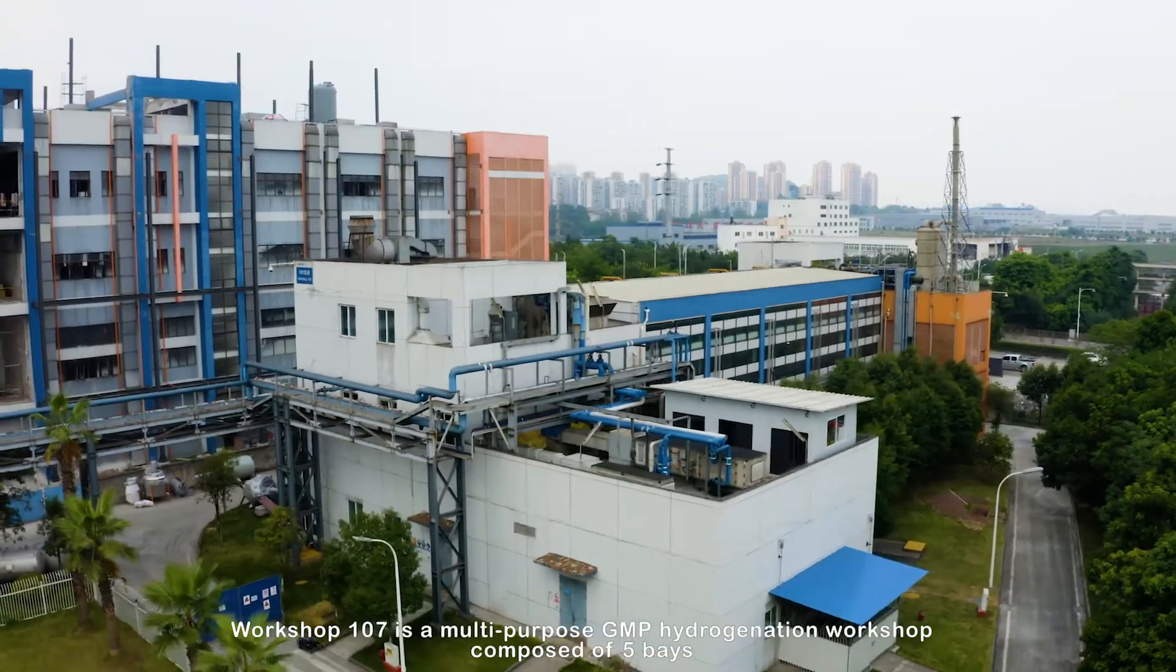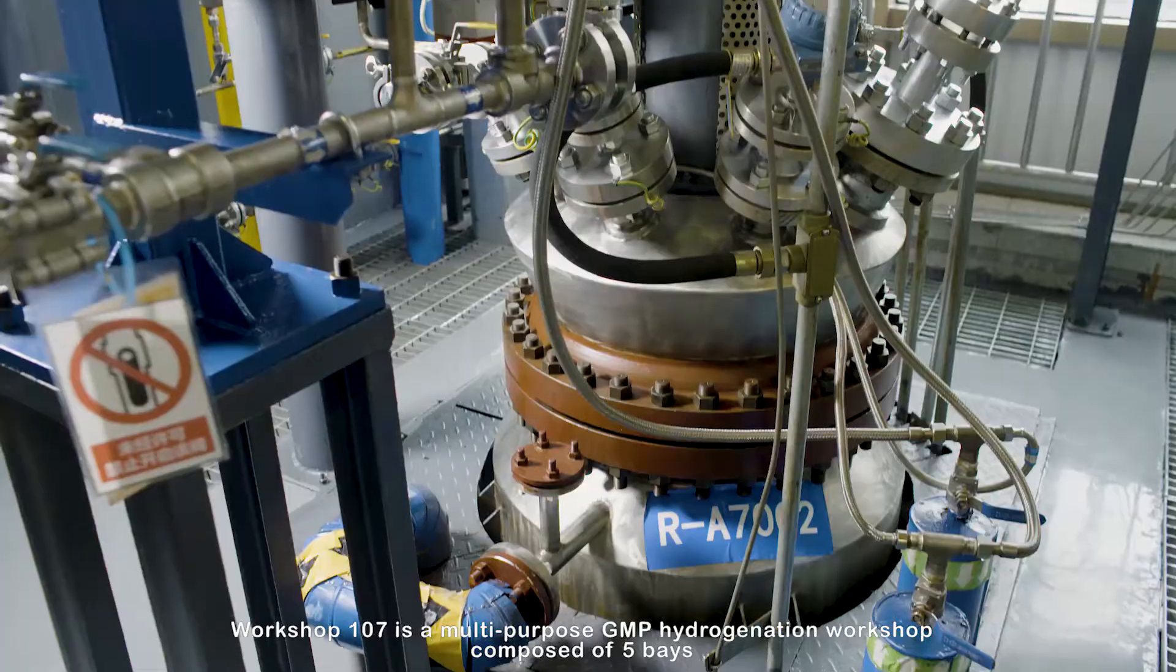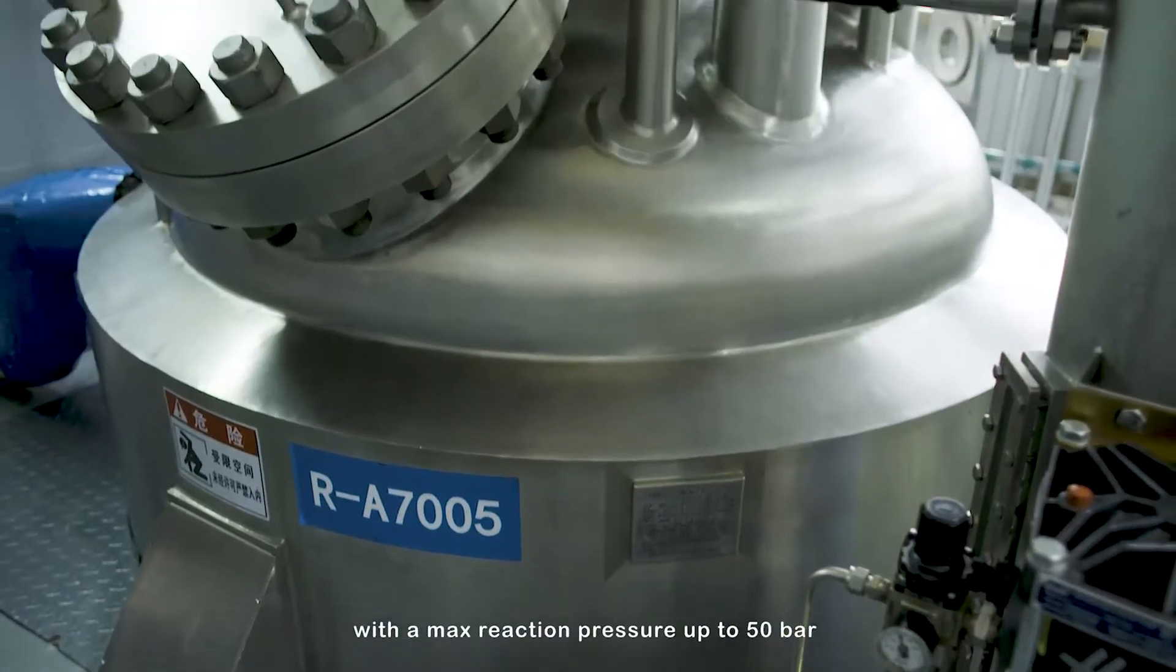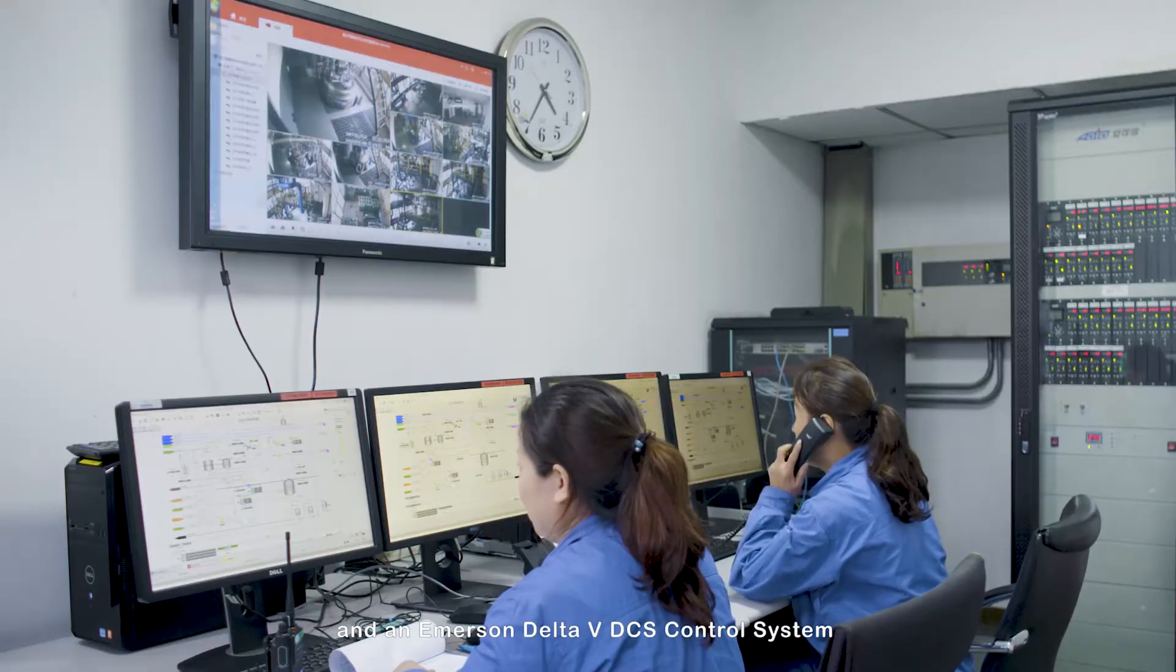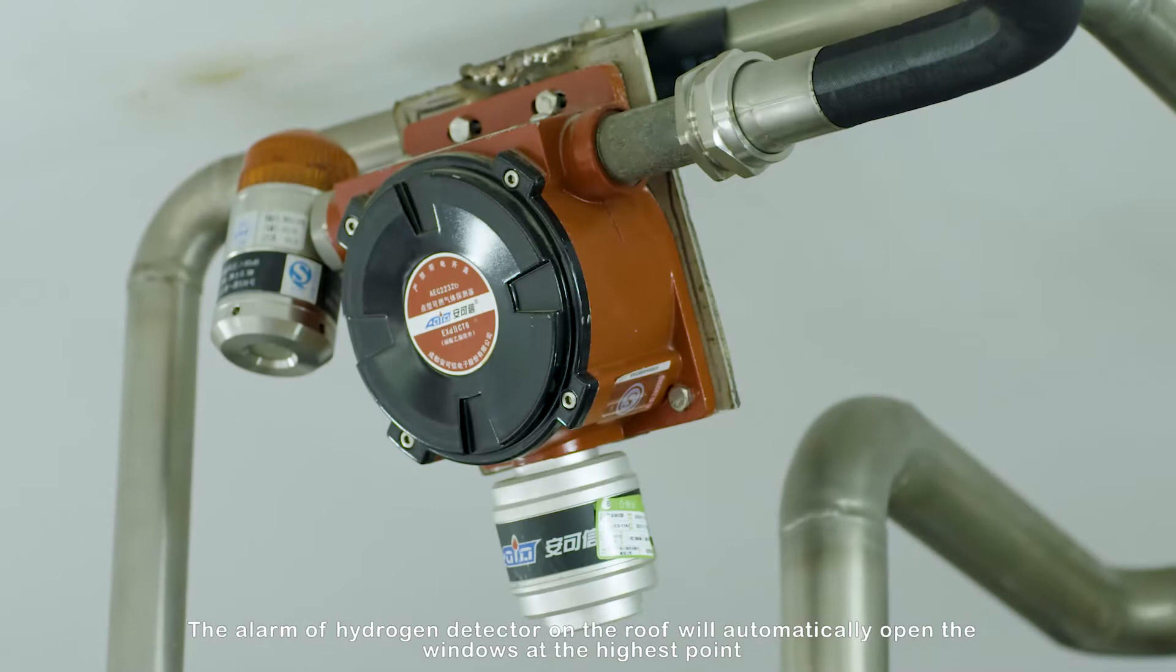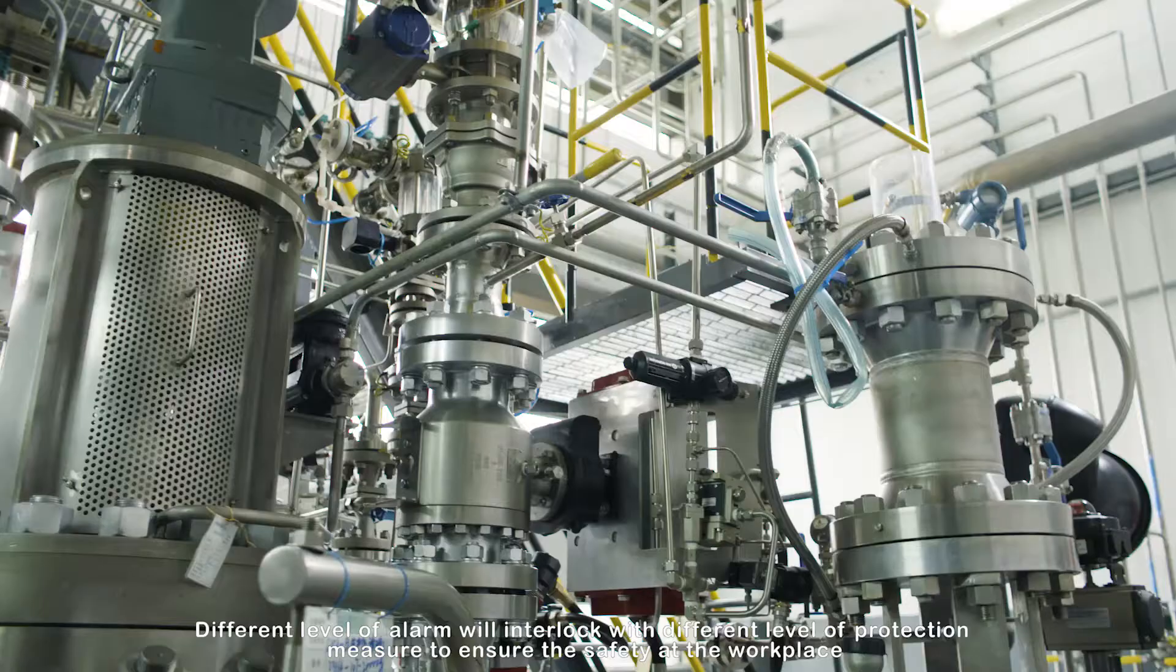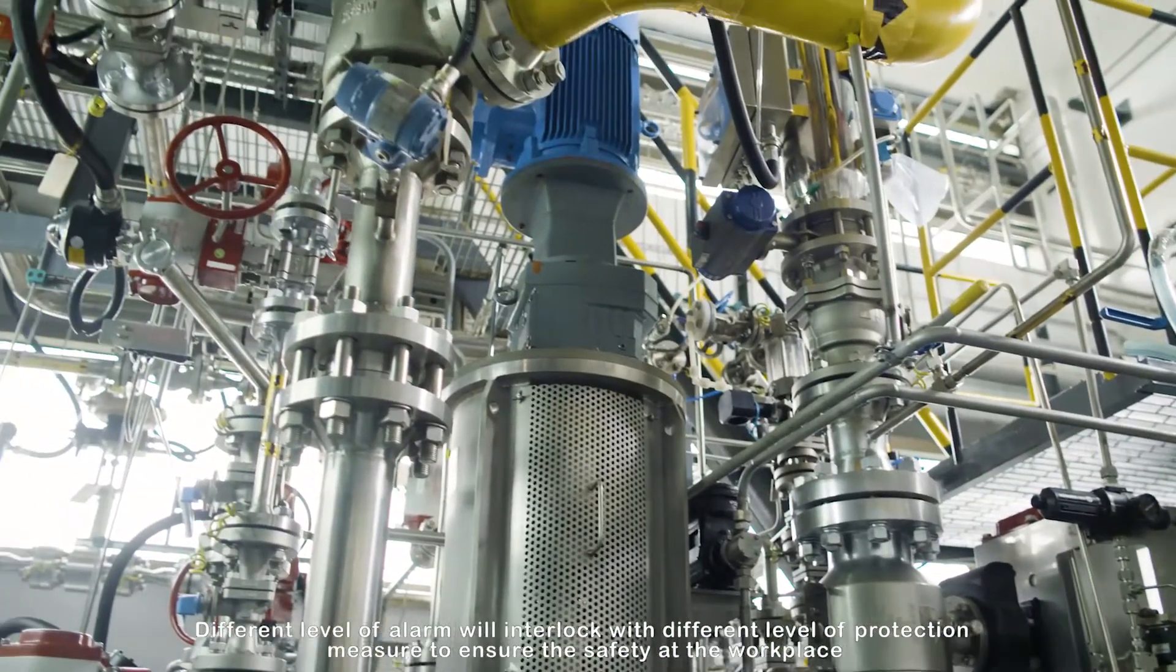Workshop 107 is a multi-purpose GMP hydrogenation workshop composed of 5 bays, equipped with multiple 200-liter to 5,000-liter hydrogenation reactors with a max reaction pressure up to 50 bar, and an Emerson Delta V DCS control system. The alarm of hydrogen detector on the roof will automatically open the windows at the highest point. Different level of alarm will interlock with different level of protection measure to ensure the safety at the workplace.